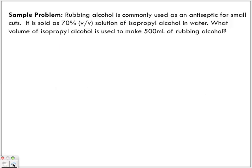Sample problem: Rubbing alcohol is commonly used as an antiseptic for small cuts. It is sold as 70% v/v solution of isopropyl alcohol in water. What volume of isopropyl alcohol is used to make 500 milliliters of rubbing alcohol?